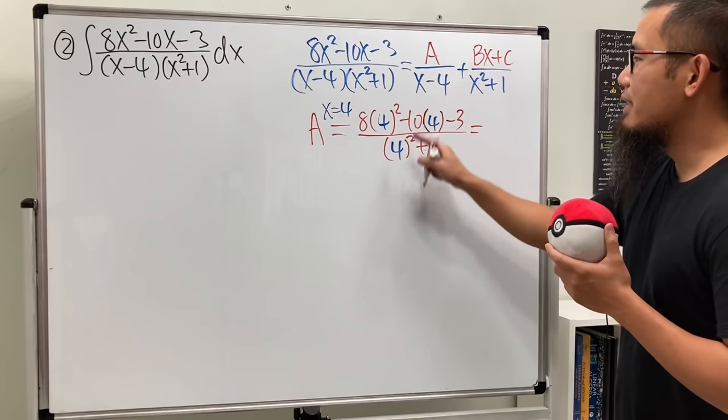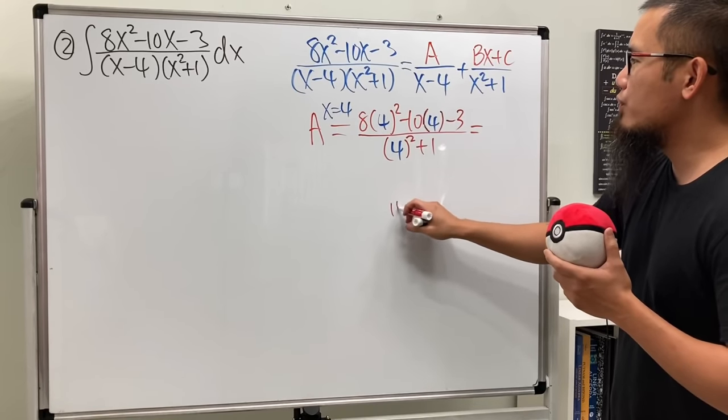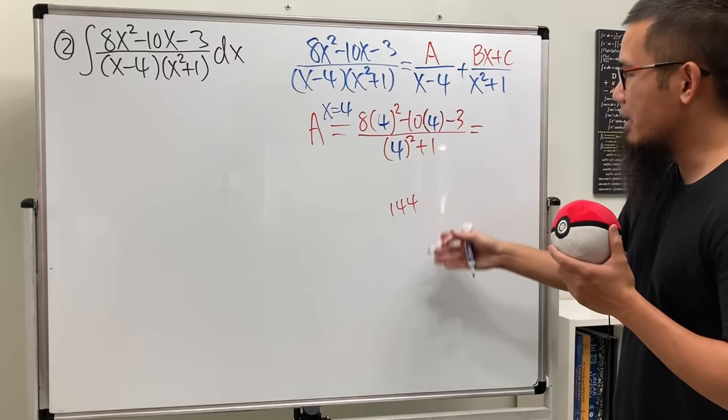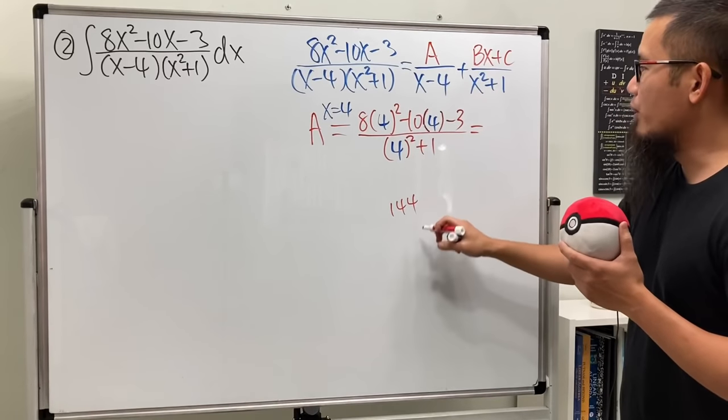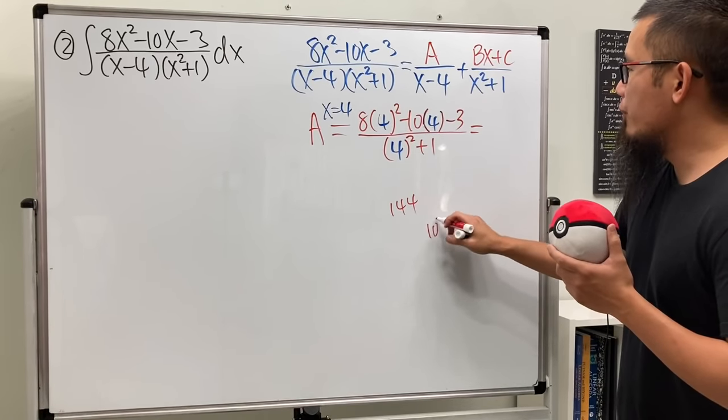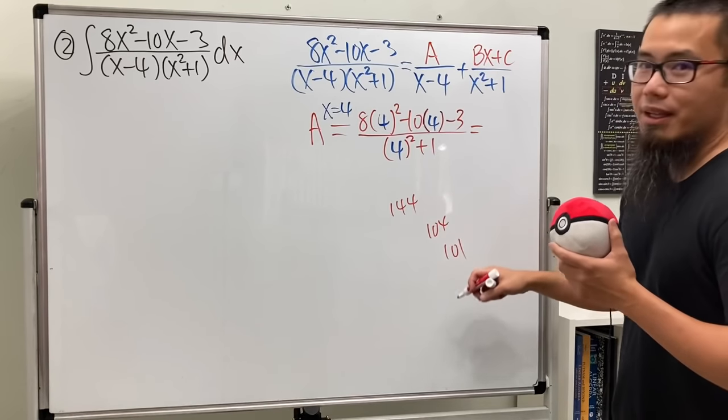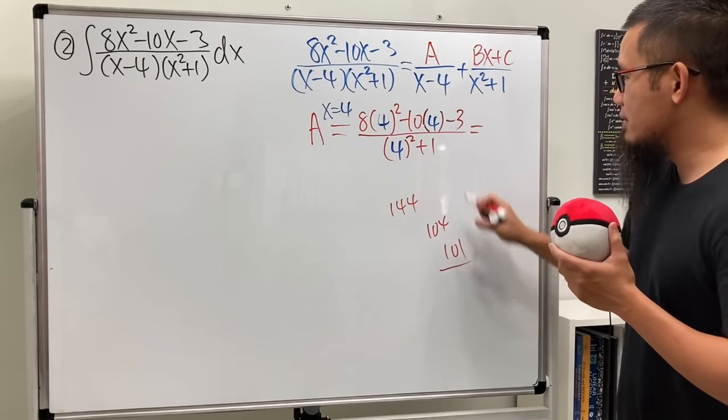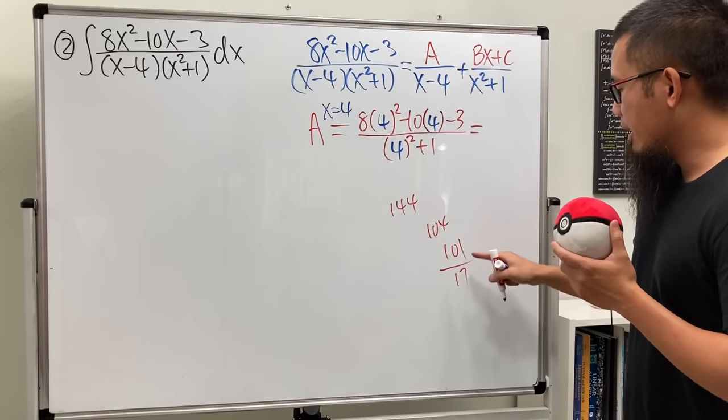Let's see, this is 16 times 8, which is going to be 144. Yes, and then minus 40, so it's going to be 104, and then minus 3 is going to be 101. And then on the bottom it's going to be 16 plus 117.